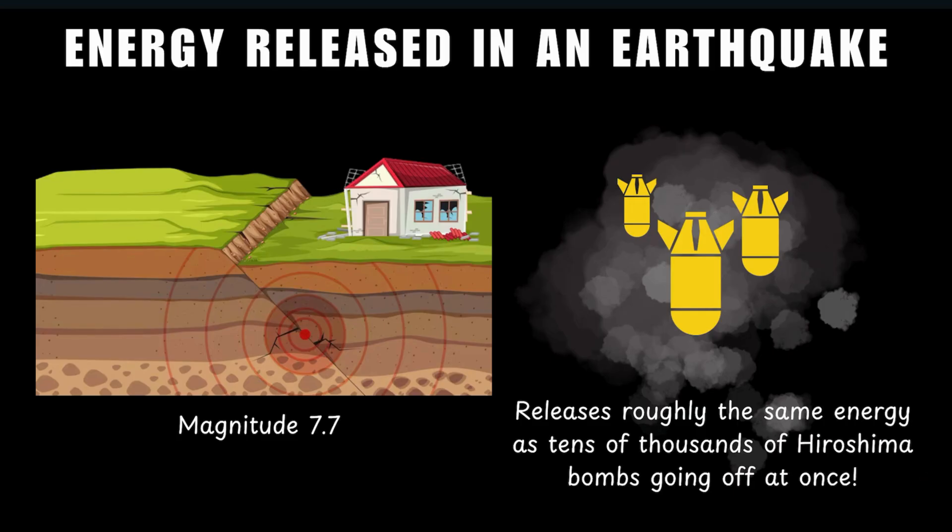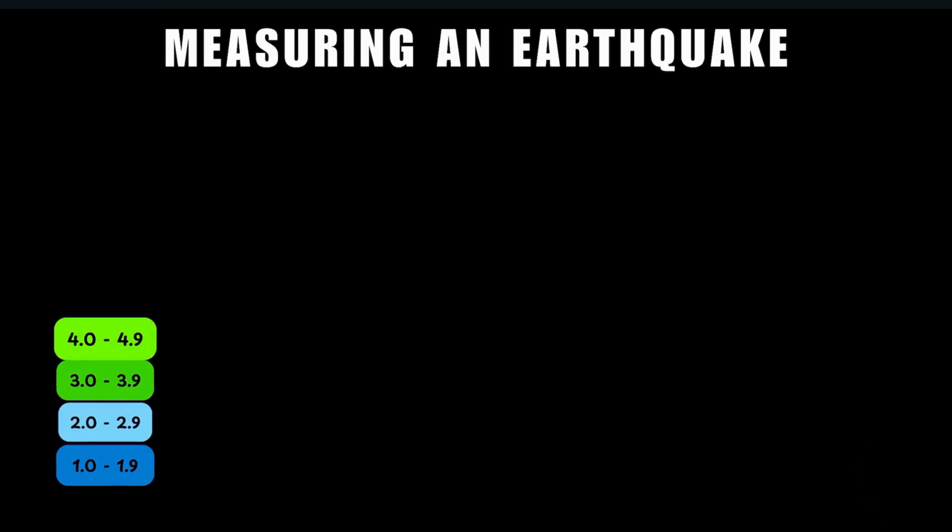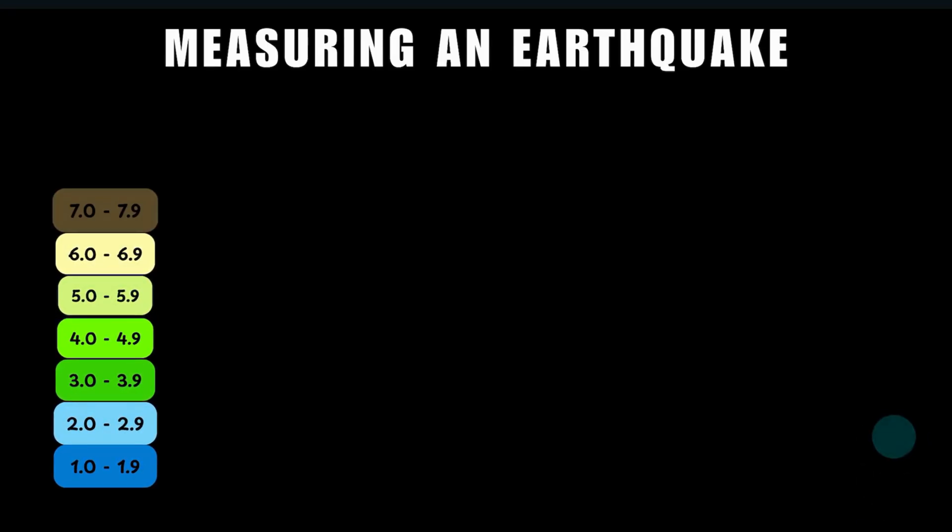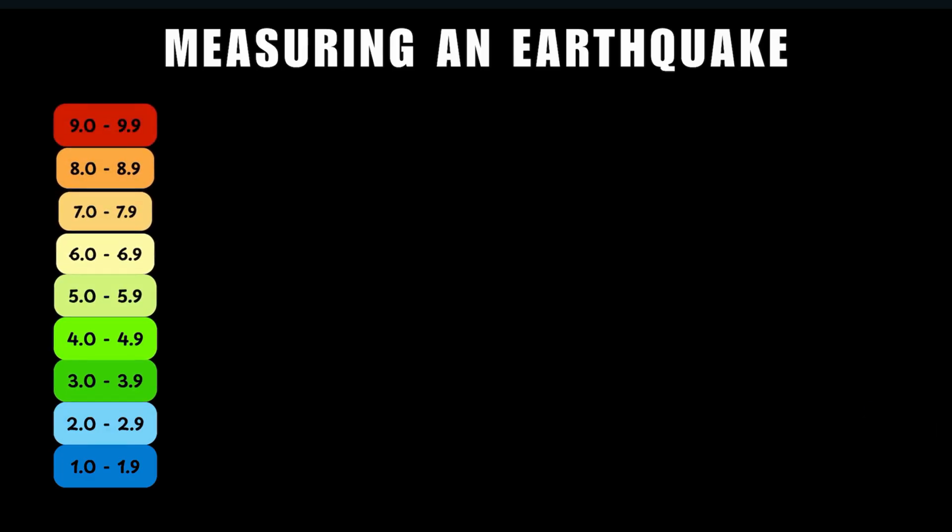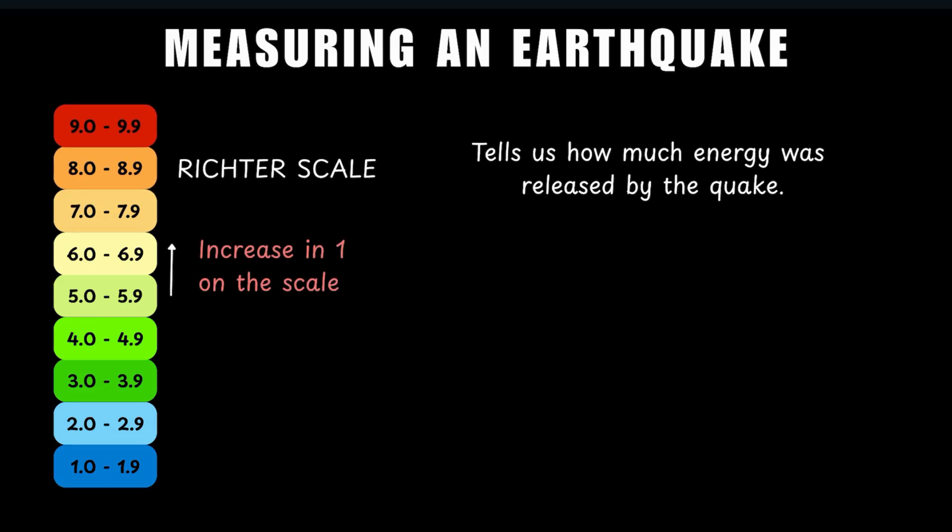By the way, the magnitude of an earthquake is measured on a scale which we call the Richter scale. And the Richter scale tells us how much energy was released by the quake. Each increase of 1 on this scale means that the quake is about 10 times stronger in shaking and releases about 30 times more energy.